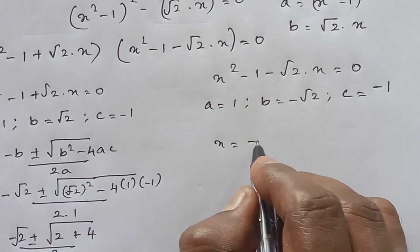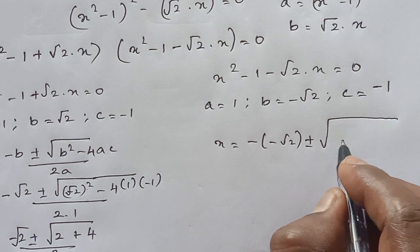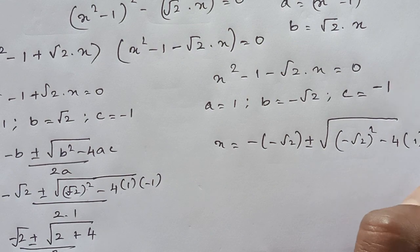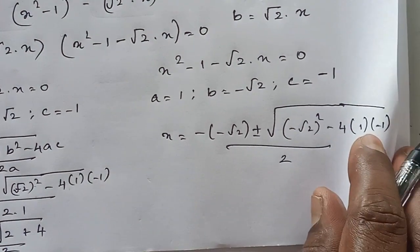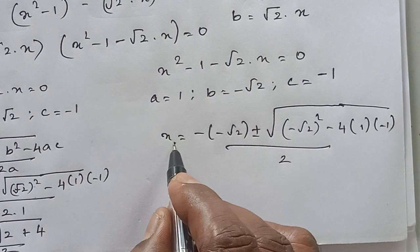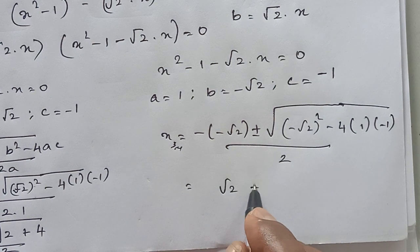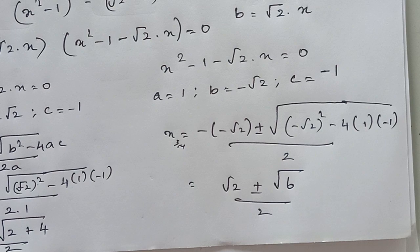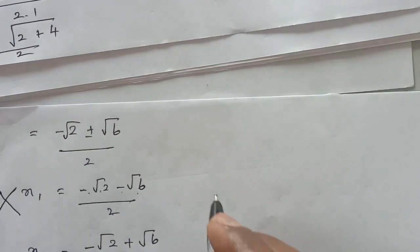Substituting into the quadratic formula, here a equals 1, b equals minus √2, c equals minus 1. So x equals minus of (minus √2) plus or minus square root of (minus √2) squared minus 4 times 1 times minus 1, divided by 2. This gives x equals √2 plus or minus √6 divided by 2.